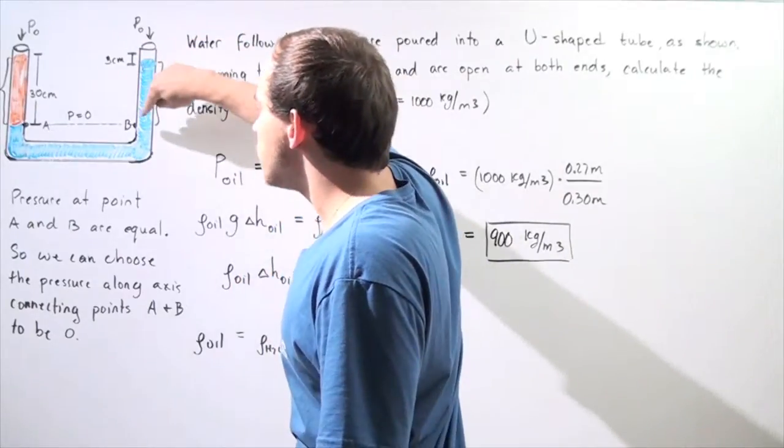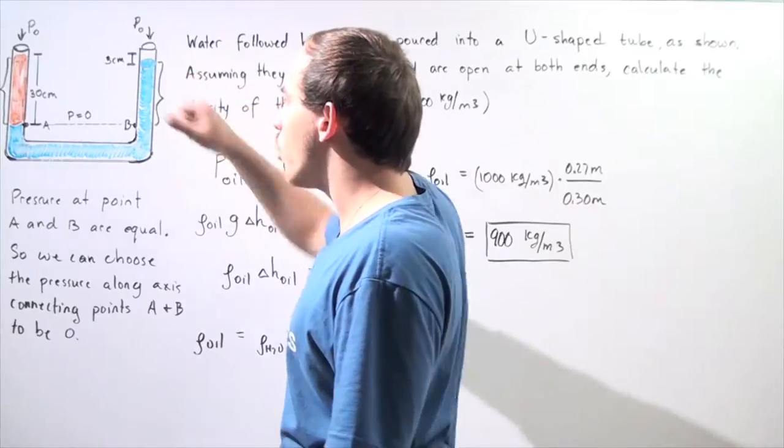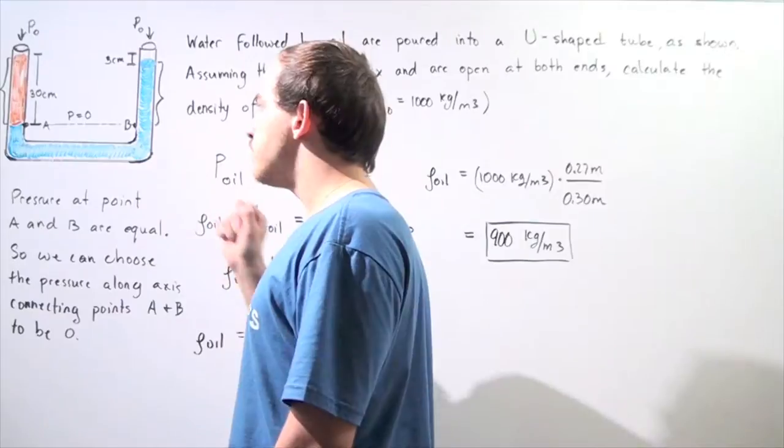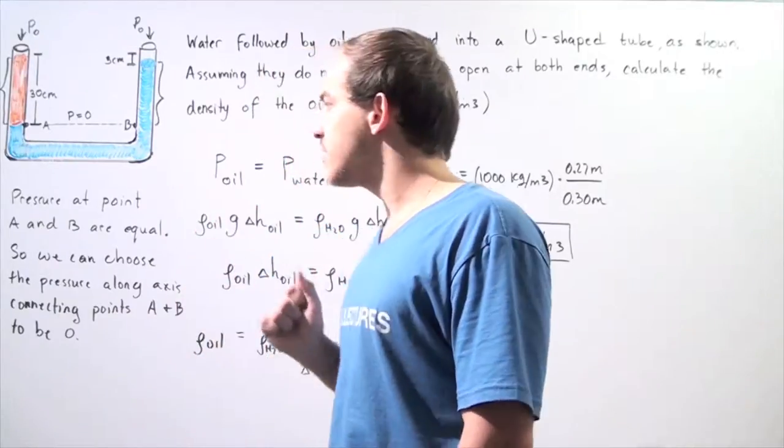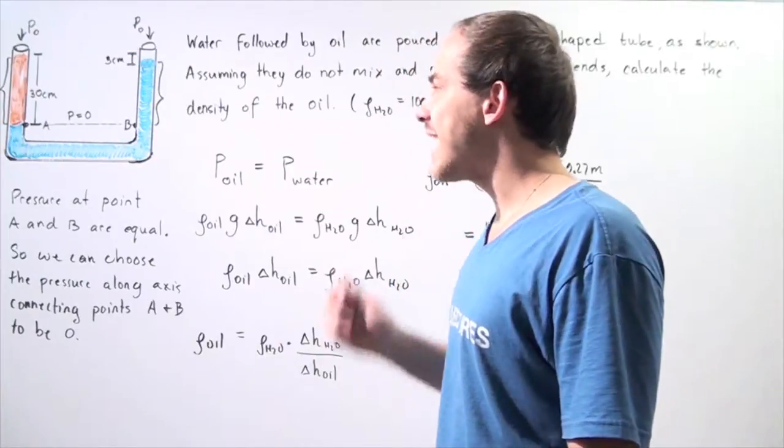Now notice the vertical distance between point A and point B is zero. And so that means the pressure at point A and point B is exactly the same.